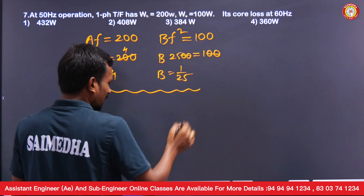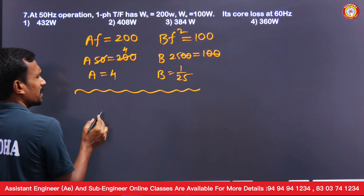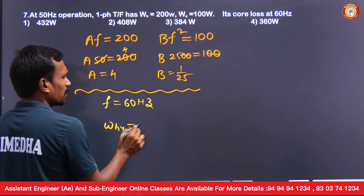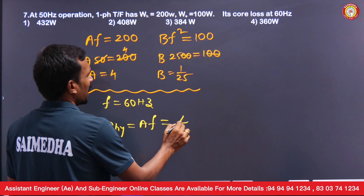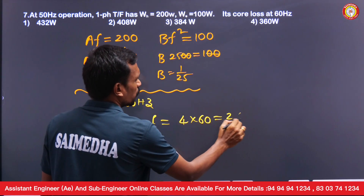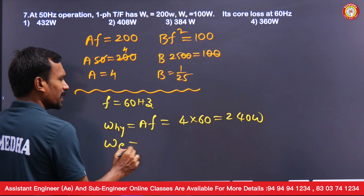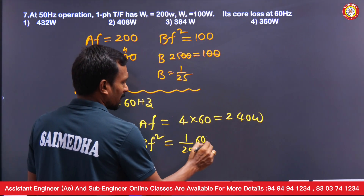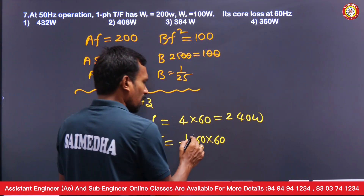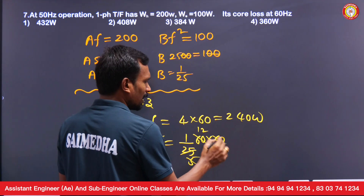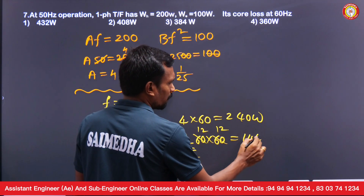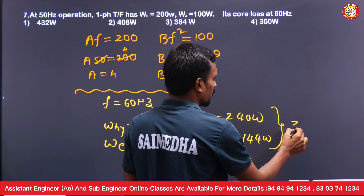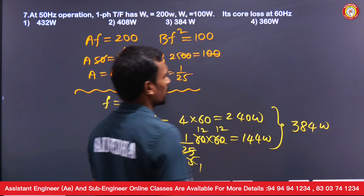Now we need core losses at 60 Hz. Hysteresis loss = a·f = 4×60 = 240 watts. Eddy current loss = b·f² = (1/25)×60² = (1/25)×3600 = 144 watts. Core loss is the combination of both, so the answer is 240 + 144 = 384 watts.